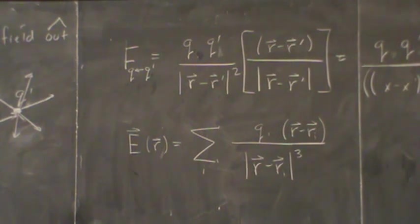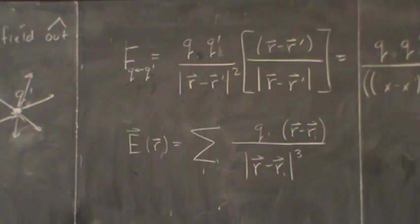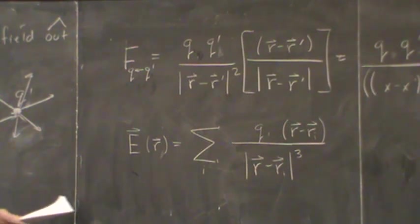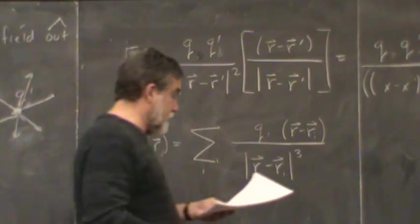All of the vector calculus relationships — divergence, curl, and all of that — is going to apply equally well. If we can show that it works for one charge, then it's actually going to work for a collection of charges as well, because it's a simple linear superposition of the vector fields.